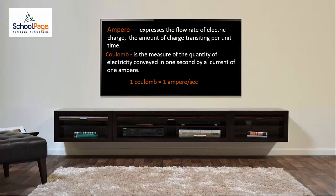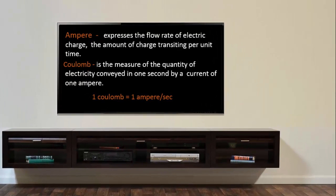Ampere expresses the flow rate of electric charge, the amount of charge transiting per unit time. Coulomb is the measure of quantity of electricity which is conveyed in one second by a current of one ampere. So one coulomb equals one ampere per second.